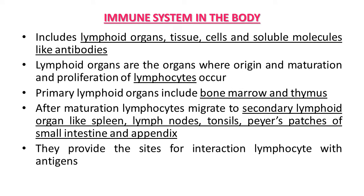Now, regarding the immune system of the human body — the human immune system is generally made up of lymphoid organs, some tissues, cells, and soluble molecules like antibodies. Some organs related to this immune system are known as lymphoid organs — some are primary lymphoid organs and some are secondary lymphoid organs. These are the organs where origin, maturation, and proliferation of lymphocytes occur.